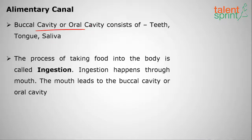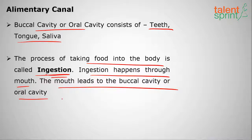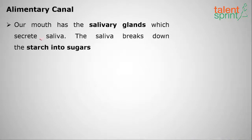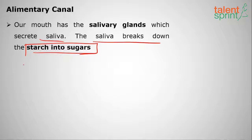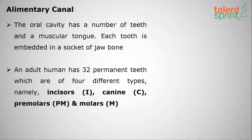The first part of the alimentary canal is the buccal cavity or oral cavity. It consists of the teeth, the tongue, and saliva secreted by the salivary glands. The process of taking food into the body is called ingestion. The mouth leads to the buccal cavity. Our mouth has salivary glands which secrete saliva. The first function of saliva is to break down starch into sugars.